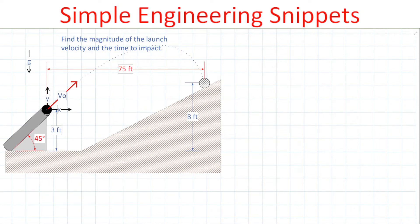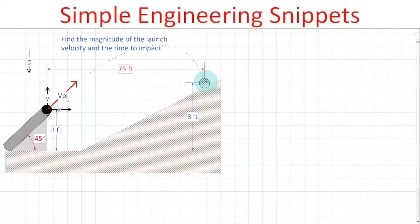Welcome to another Simple Engineering Snippet. In this video, we're going to be working on an example problem where we will determine the initial speed or magnitude of the velocity of a projectile exiting this launch tube, and find the impact as the projectile lands on this slope. I hope you find it useful.